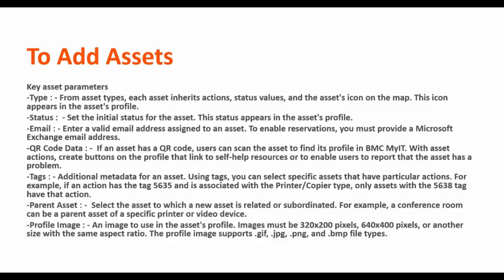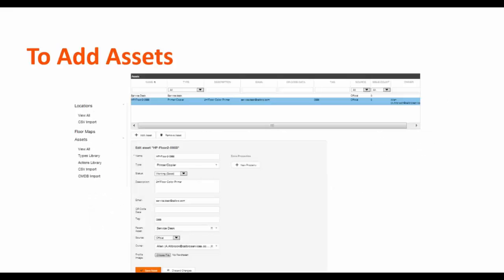You can also add a tag to select specific assets that have particular actions, and a profile image — an image that is used as the asset's profile. It must be 320 by 200 pixels or another size with the same aspect ratio. This is an example of a newly created asset.